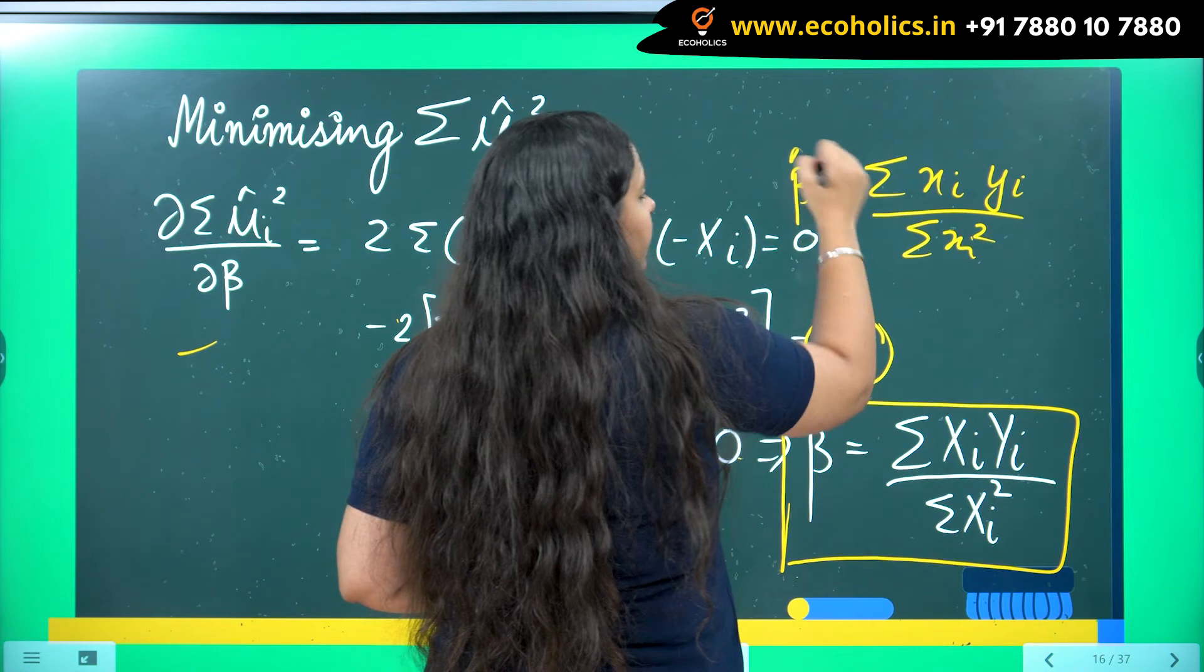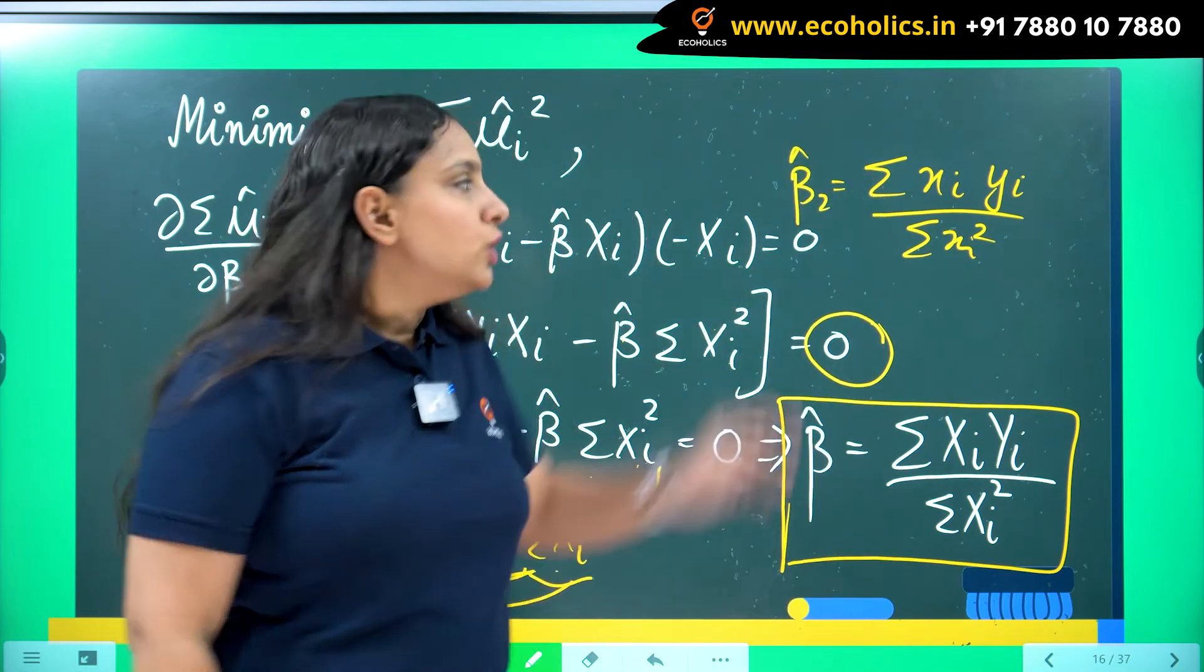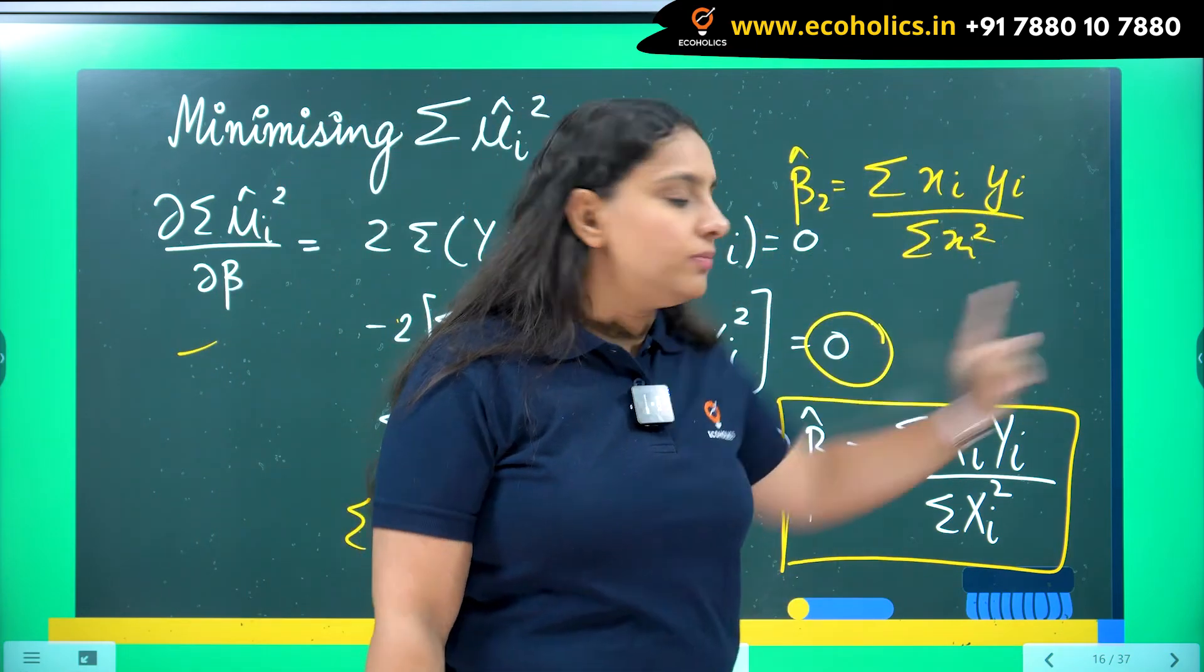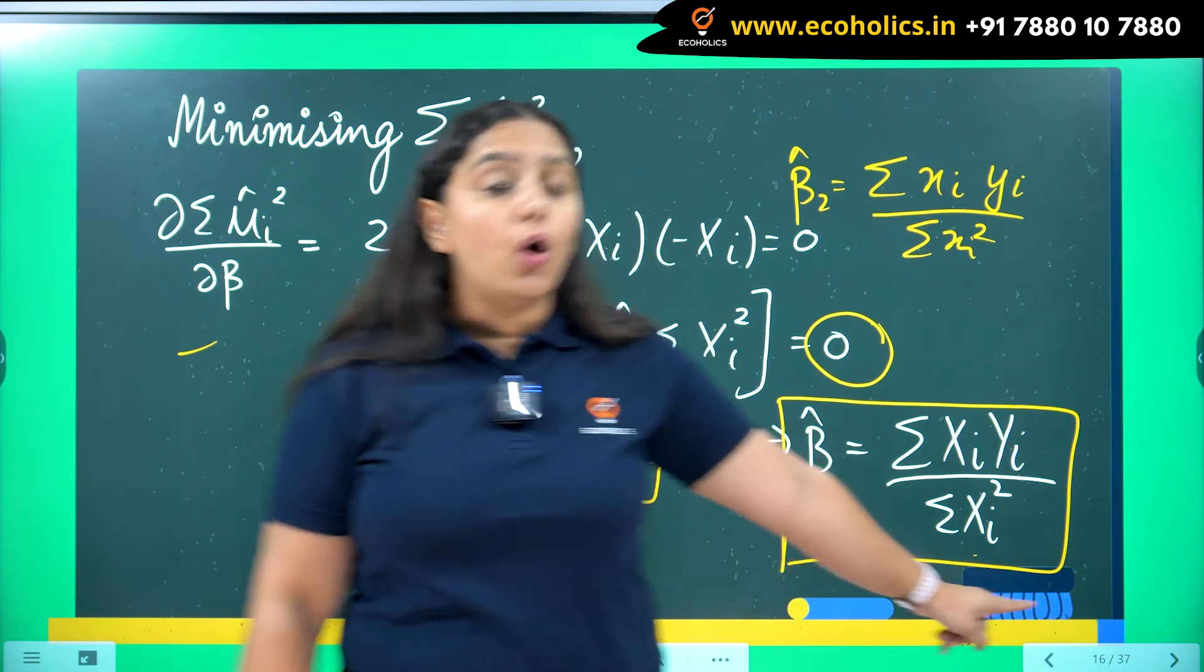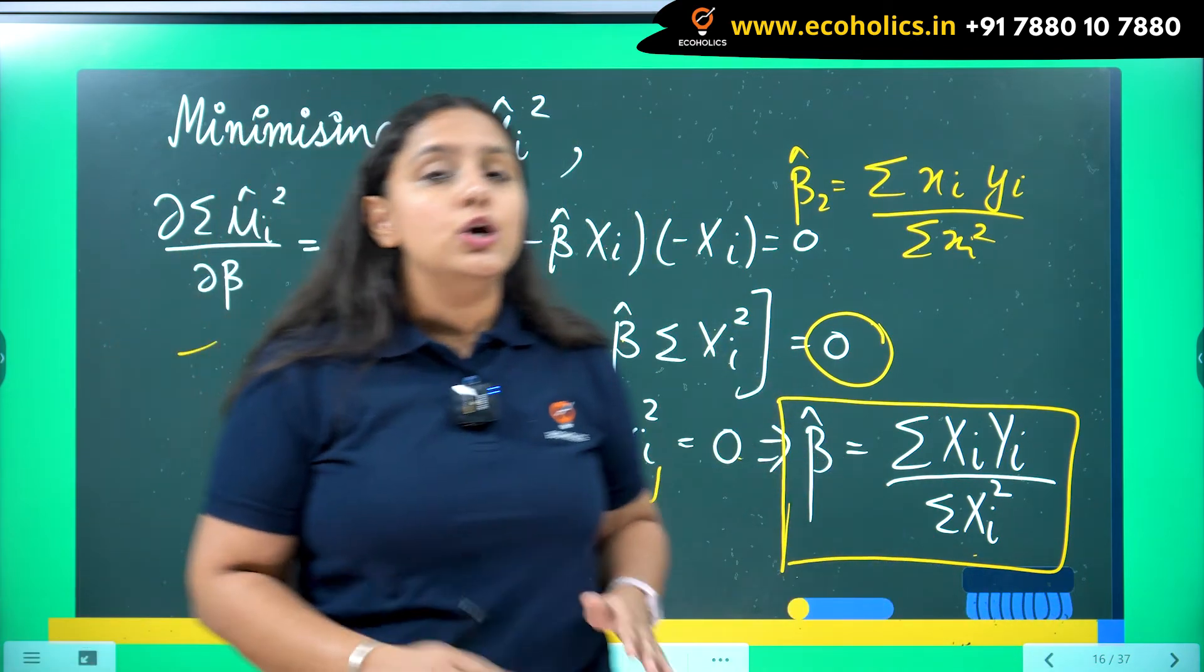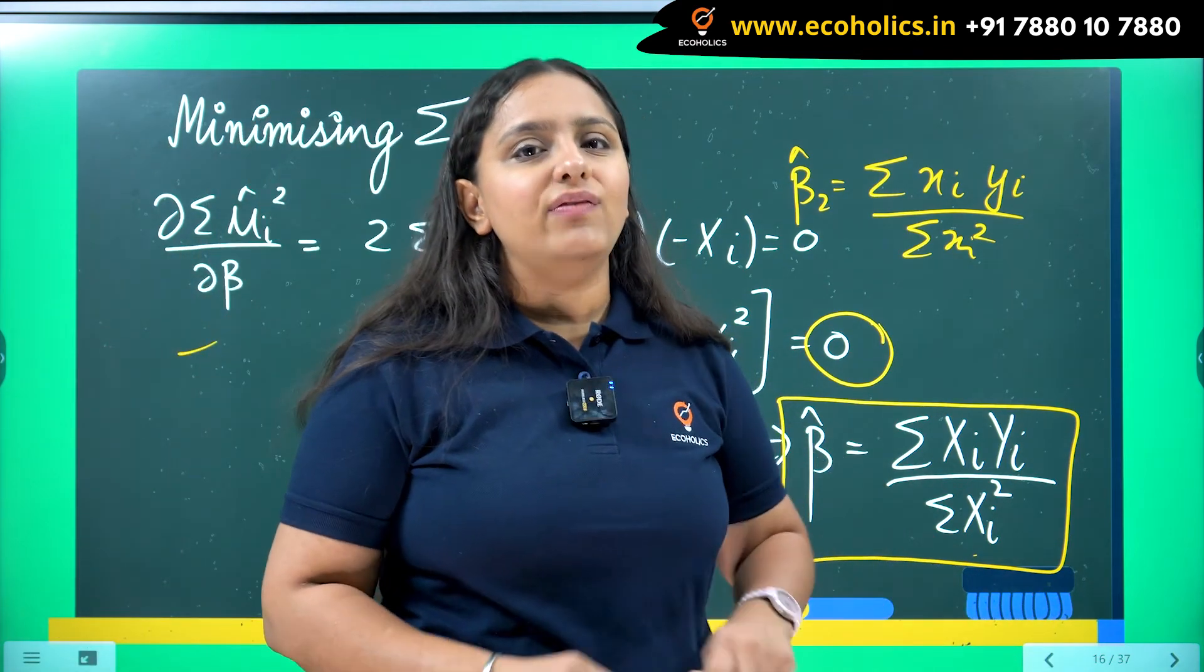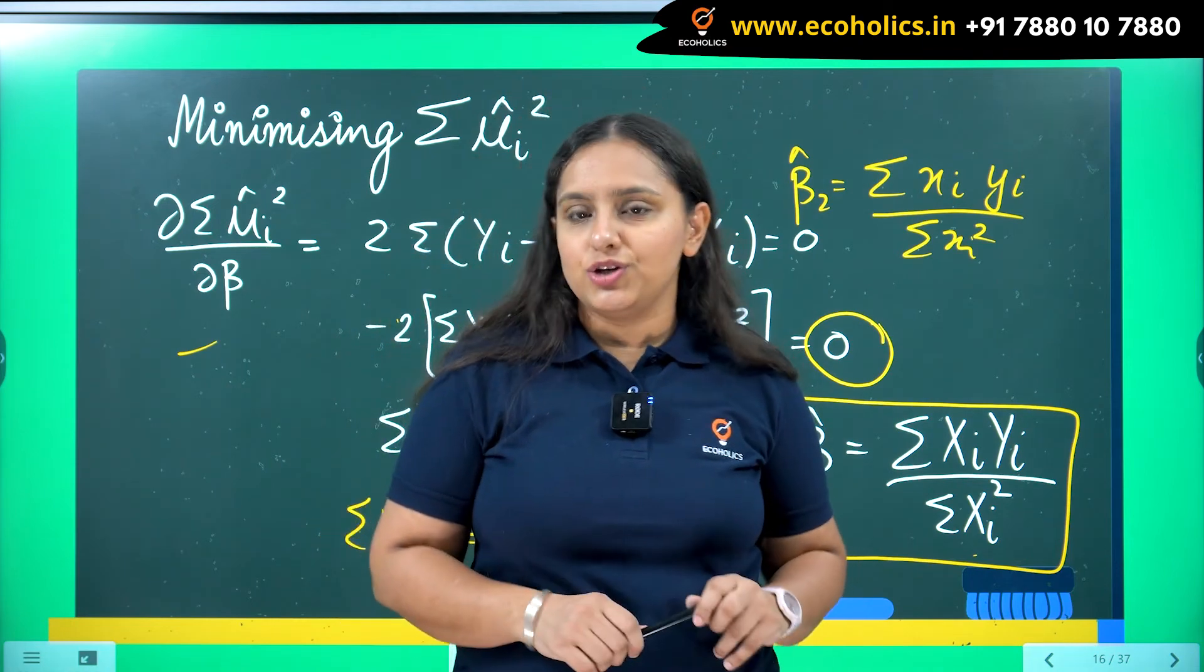In simple linear regression it is given by summation small xi yi upon summation small xi square. In deviation form. But in regression through origin, we always have raw forms. So this was the method for deriving the slope coefficient in regression through origin.